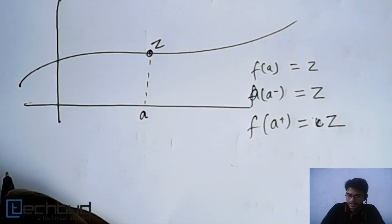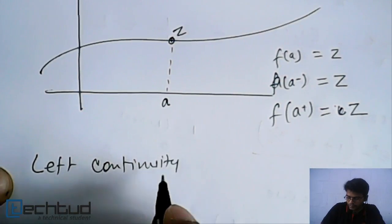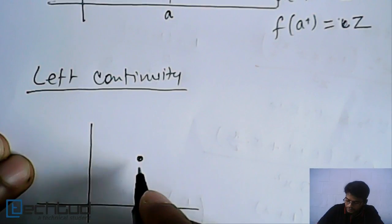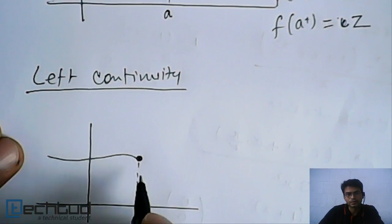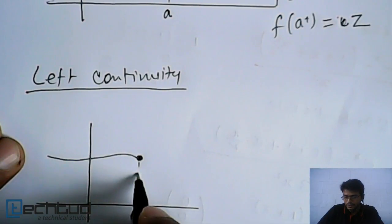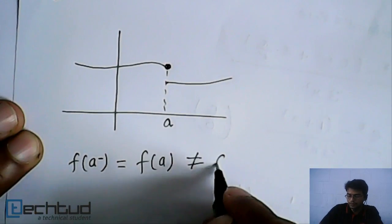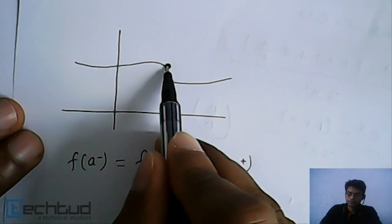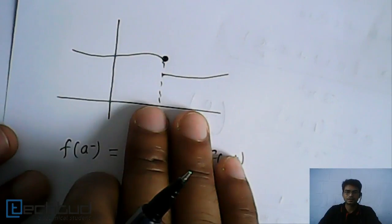We also have the terms left continuity and right continuity. Left continuity means: for a function at point 'a', it is continuous from the left but not from the right. That is, f(a⁻) equals f(a), but it is not equal to f(a⁺). The value of this function equals the left-hand limit, but the right-hand limit is different. So actually the limit doesn't exist, but we can say this function is left continuous.